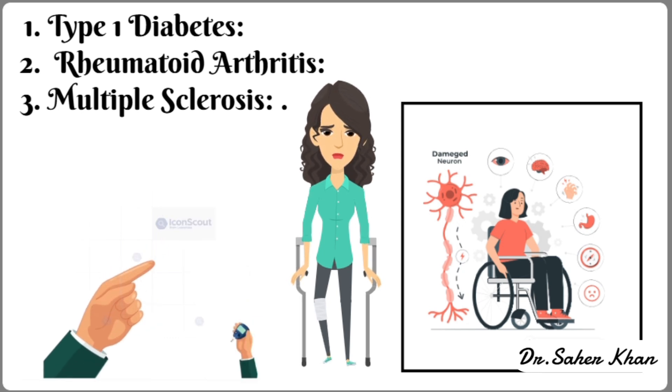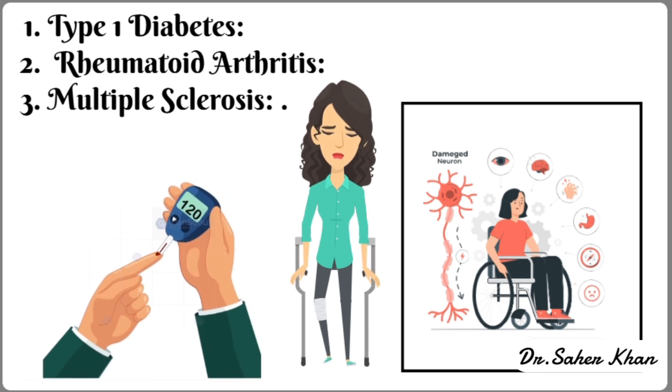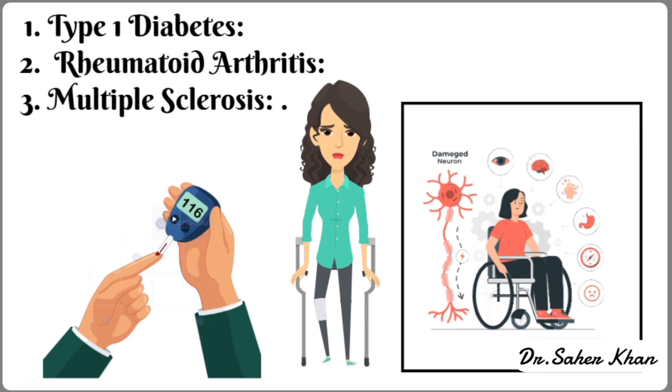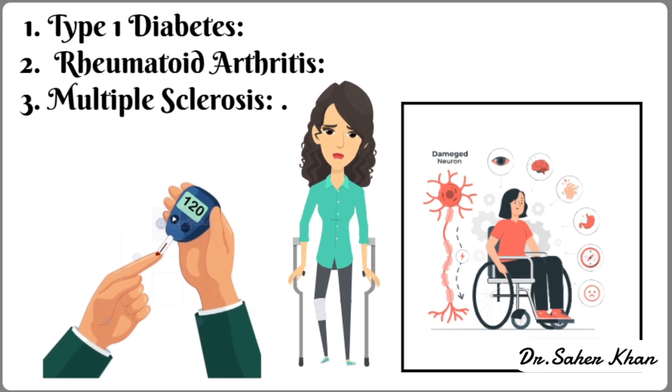Here are a few examples: Type 1 diabetes, where the immune system attacks the insulin-producing cells in the pancreas; rheumatoid arthritis; multiple sclerosis; and many more.